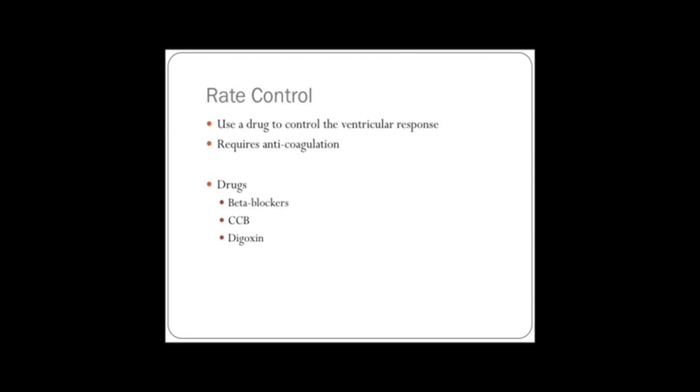So when we talk about rate control, all that we're doing basically is using some sort of drug to control the rate at which the ventricles are firing in response to the atria fibrillating. That's the absolute basics. However, if we do that, the atria are still in fibrillation, and there's a risk of clot formation and emboli. So that always requires anticoagulation.